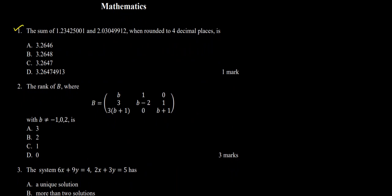Question one asks: the sum of 1.23425001 and 2.03049912, when rounded up to four decimal places, is what? This question seems easy, but the trick is that many candidates make a mistake — they first round these two numbers to four decimal places and then add them, which gives a wrong answer.